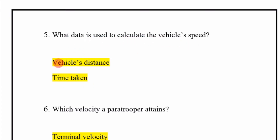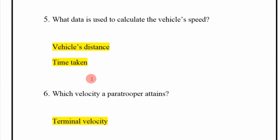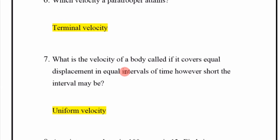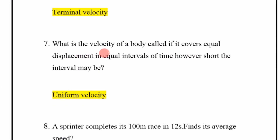Which velocity does a paratrooper attain? Terminal velocity. What is the velocity of a body called if it covers equal displacement in equal intervals of time, however short the interval may be? Uniform velocity.